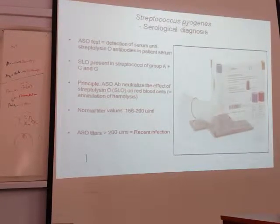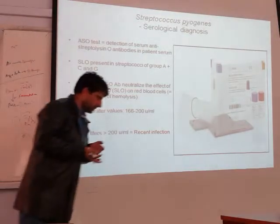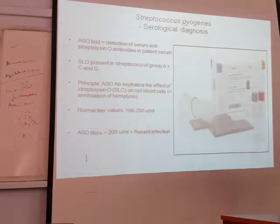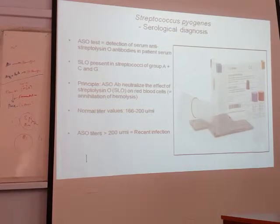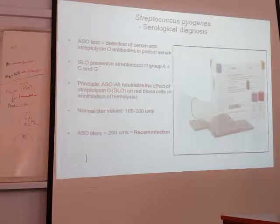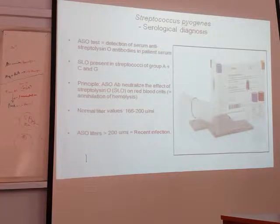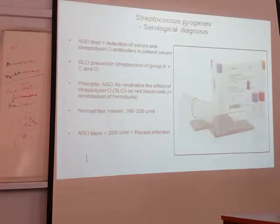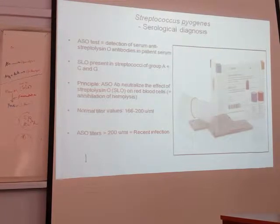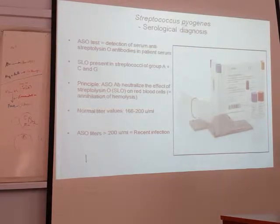S and O are produced by streptococcus pyogenes biogenesis. O means oxygen, and what does the oxygen level mean here? The nature is exposed to oxygen and hemolyzes, but S does not hemolyze. S and O are used in surgical diagnosis, but S is not used in surgical diagnosis because it lacks immunity.